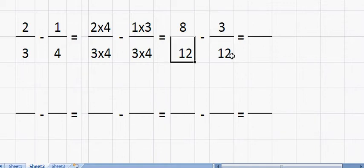Now, we've got the same thing on the bottom of both fractions. And we can just go ahead with our subtraction. So that's eight minus three, which gives me five over 12.